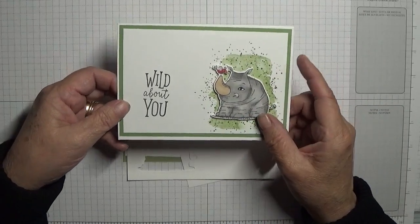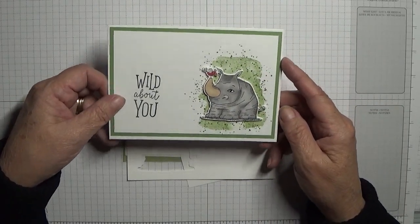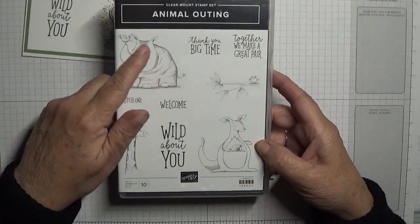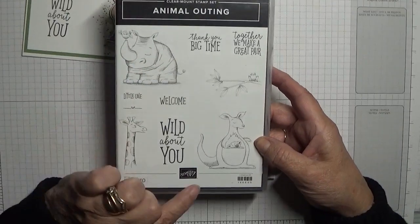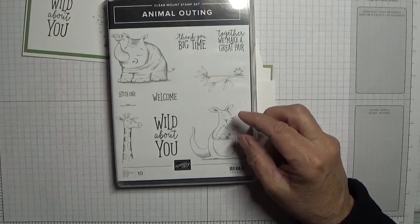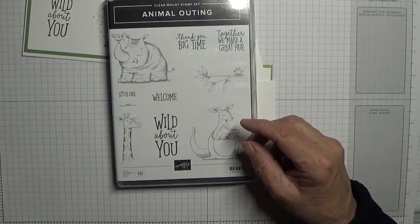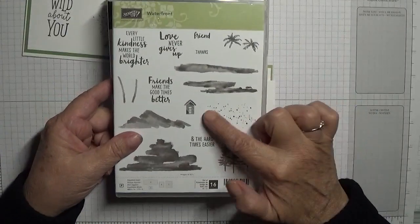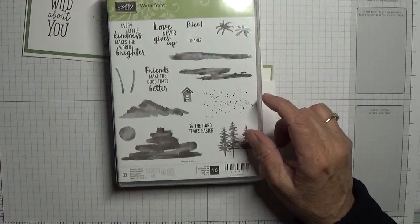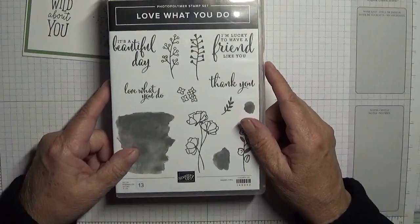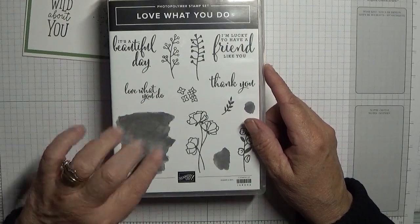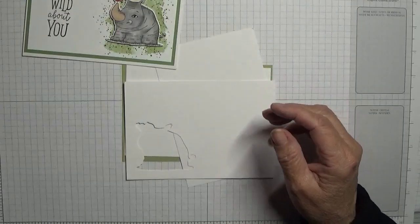Today's stamp set is Animal Outings and we're going to be using the rhino and the sentiment wild about you. I'm also going to be using the Waterfront set to use the pebble dash stamp, and I'm also going to be using Love What You Do to use this background bit. I have them all mounted.